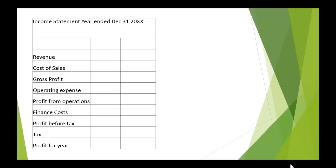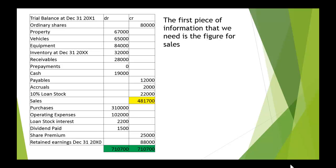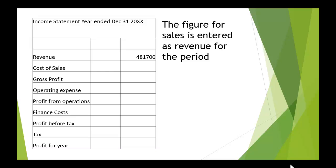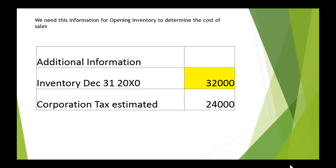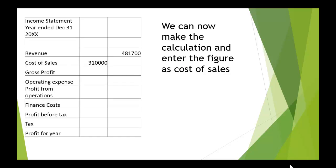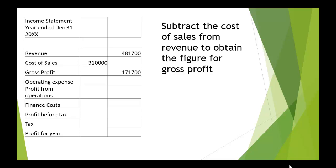The layout of the income statement is fairly similar, except that after the profit from operations we're going to look at finance costs and then tax before we get to the profit for the year. The first piece of information we need is the figure for sales: 481,700. We enter that as the revenue for the period. The next item is to determine the cost of sales, which is opening inventory plus purchases minus closing inventory. The inventory at the start was 32,000, so we can now make the calculation and enter the figure as cost of sales. Subtracting the cost of sales from revenue, we get a figure for gross profit: 171,700.